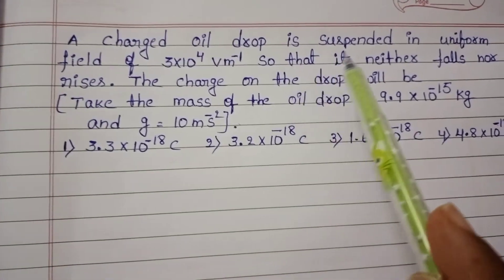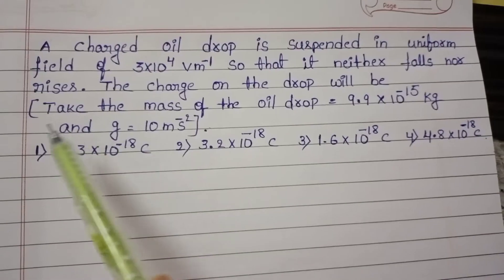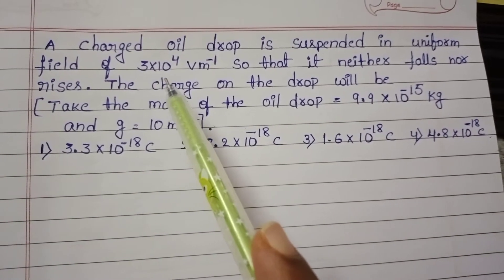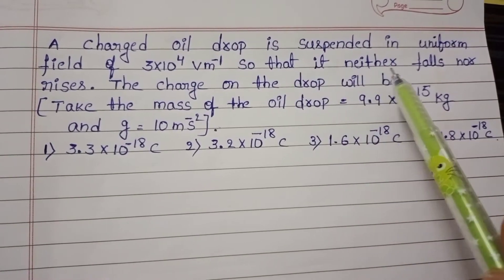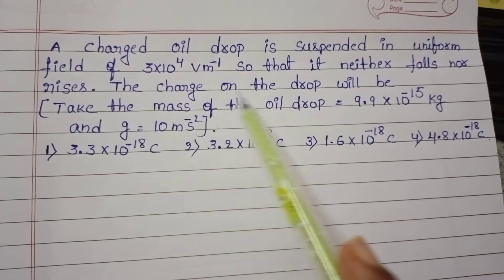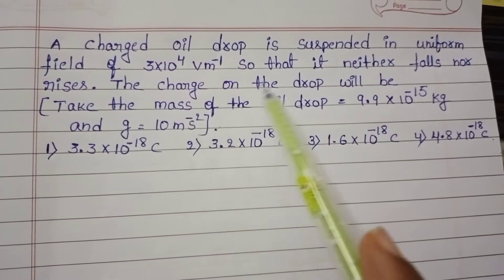A charged oil drop is suspended in uniform field of 3 into 10 power 4 volt per meter so that it neither falls nor rises. The charge on the drop will be